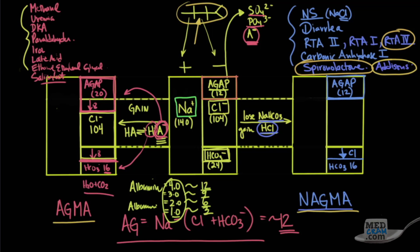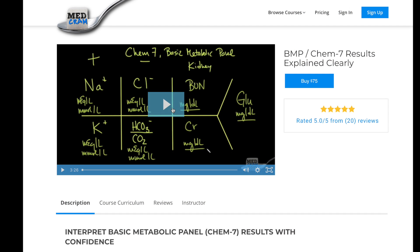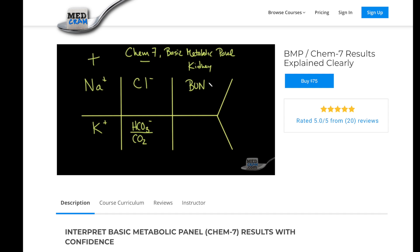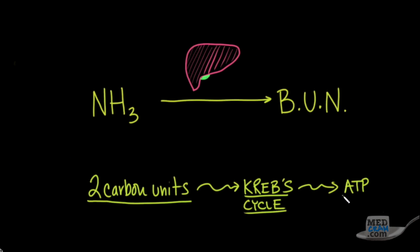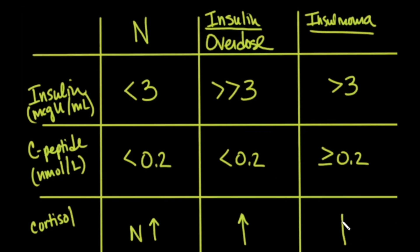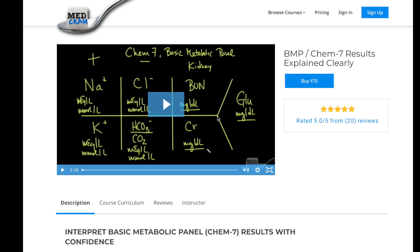This is just one video from our series Basic Metabolic Panel Explained Clearly. In addition to this acid-base content, the full course covers sodium, potassium, kidneys, and glucose — including pathophysiology, causes, manifestations, and treatment. That course is available at medcram.com.